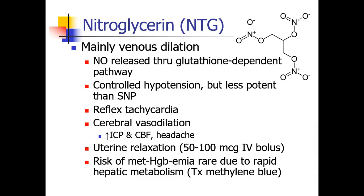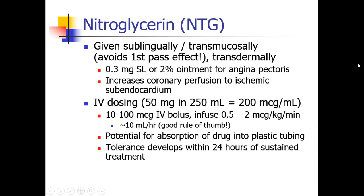This dose is usually a relatively large dose of 50 to 100 micrograms IV bolus, sometimes even 200 micrograms. You can technically get methemoglobinemia with nitroglycerin, but it's pretty rare because it's rapidly metabolized in the liver. The treatment of methemoglobinemia is methylene blue. Nitroglycerin can also be given sublingually, transmucosally, or transdermally. These mechanisms are nice because they avoid the first-pass effect where the nitroglycerin is taken up in the liver.